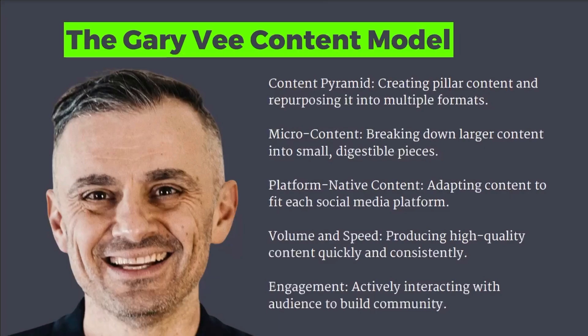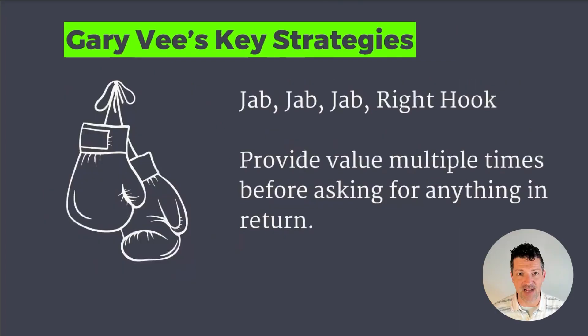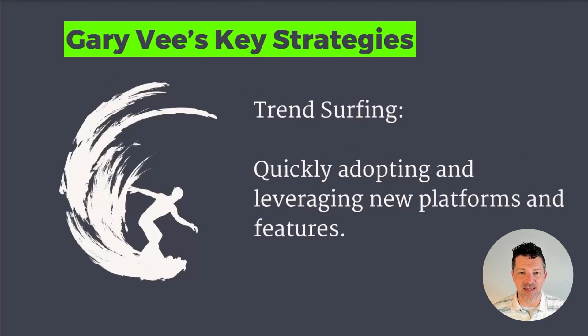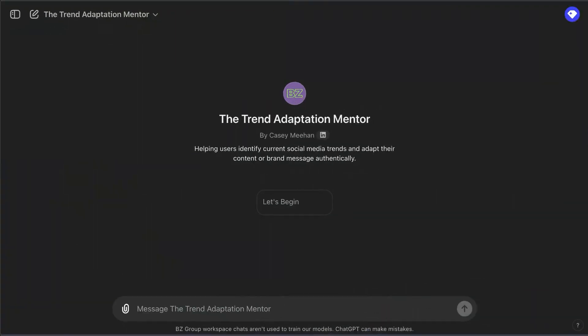He is a big fan of volume and speed, so making sure you're putting stuff out there. It's got to be created quickly and consistently. And then following engagement, getting people to respond and react to what you create. His key strategies include the jab jab right hook, which is basically providing value multiple times before you're asking for anything in return. He's also big on trend surfing, so quickly adopting and leveraging new platforms and features. I've got a custom GPT that I want to share with you that does a great job of helping with this.